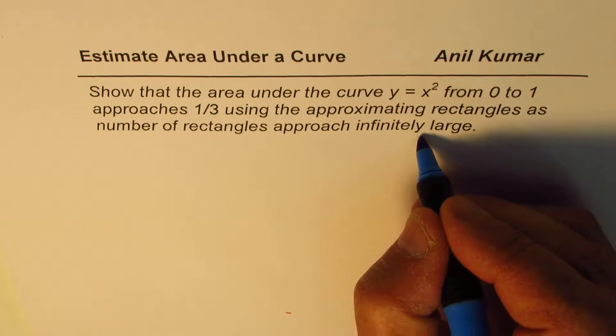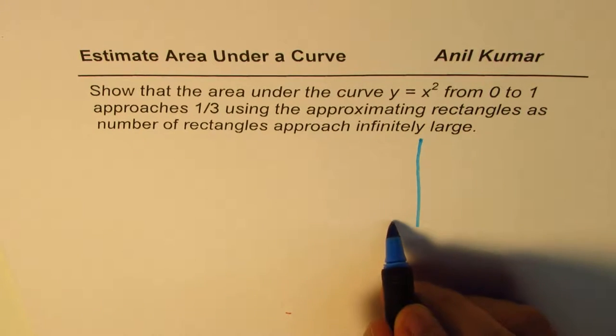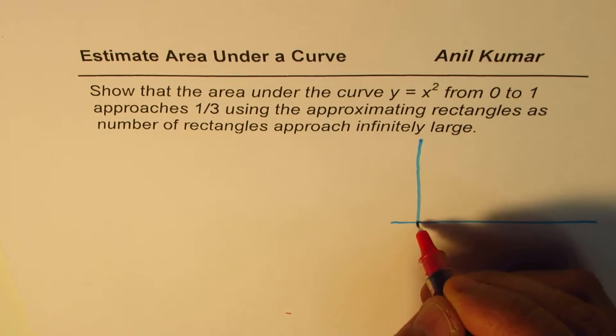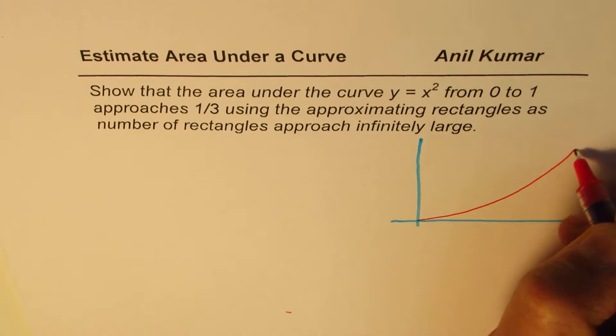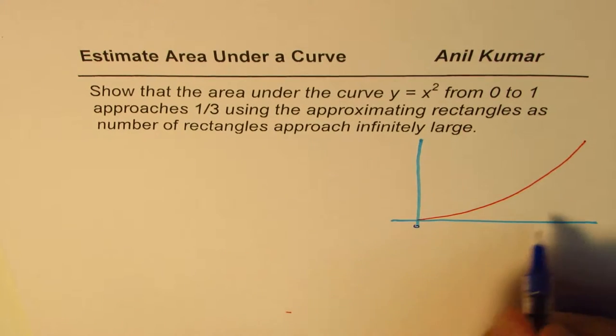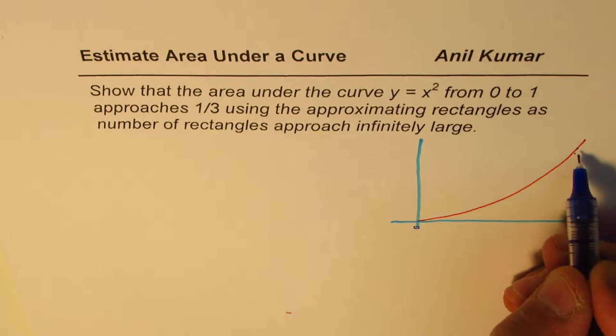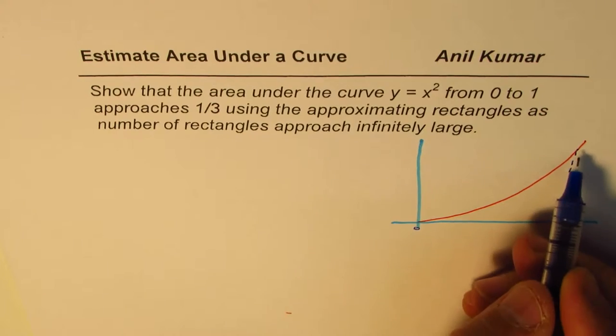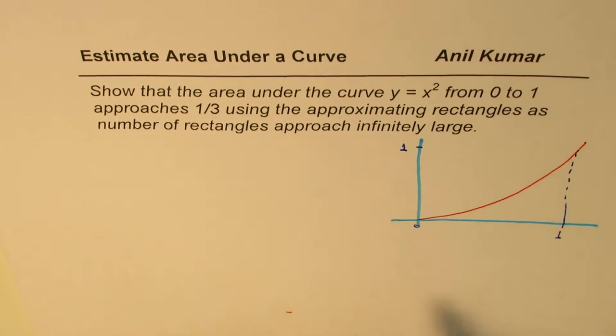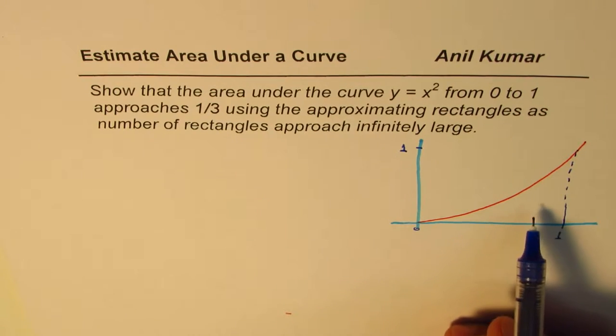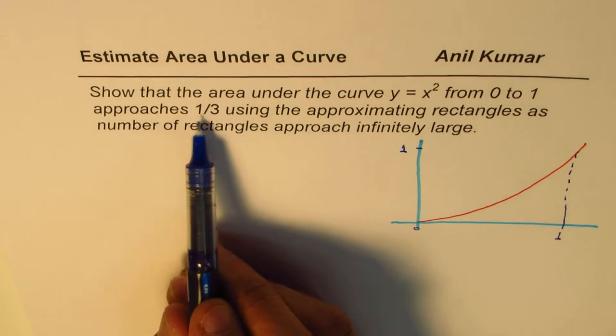So basically what we're going to do here is we'll actually approximate the area under the curve y equals x squared which is a parabola. So let me sketch one parabola here right like this from 0 to 1. So let's say this is 0 for us and this is the upper boundary 1 for us. 1 square will be 1 so that value will also be 1.